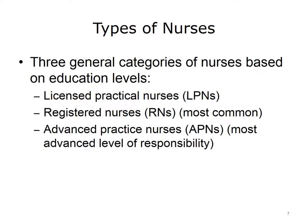There are many different types of nurses working in a variety of specialty areas in the United States. In general, most nurses fall into three categories: licensed practical nurse, or LPN; registered nurse, or RN; and advanced practice nurses, or APN. Of the three categories, LPNs have the least amount of education. APNs have the greatest amount of education and the most responsibility — for example, APNs can prescribe medications, while LPNs and RNs cannot. Most U.S. nurses are RNs.